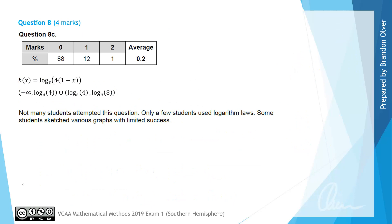From the examiner's report, only 1% of students got this answer fully correct and not many students attempted this question. Very few students used the logarithm laws required to simplify the h of x rule, and some students sketched various graphs with limited success. This was a particularly challenging problem, with only 1% of students getting full marks.